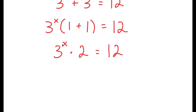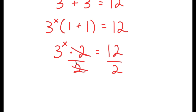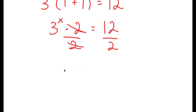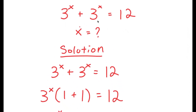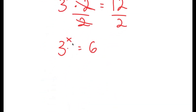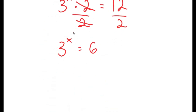From here, we want to isolate x. To do that, we have to get rid of this times 2 by dividing both sides by 2. So now these two cancel out, and I'm left with 3 to the power of x is equal to 12 divided by 2, which is 6. So now I have a much more simplified equation: 3 to the power of x is equal to 6.